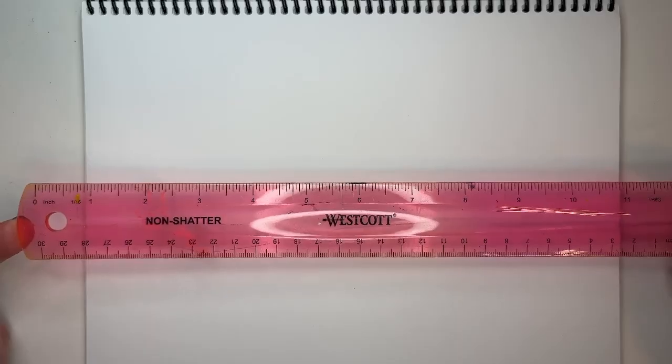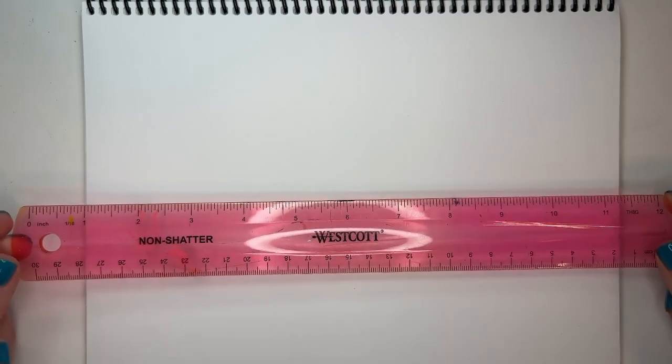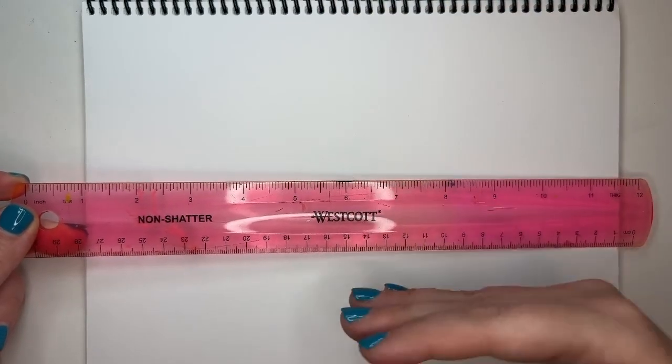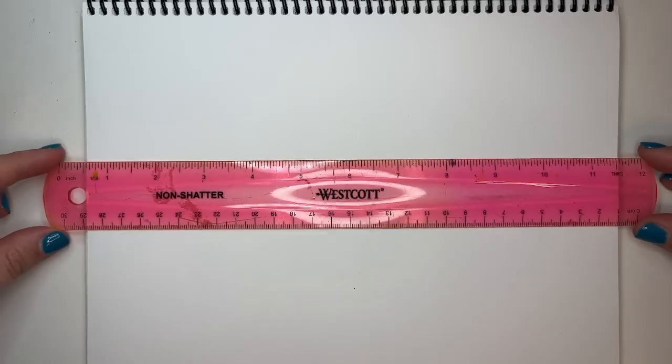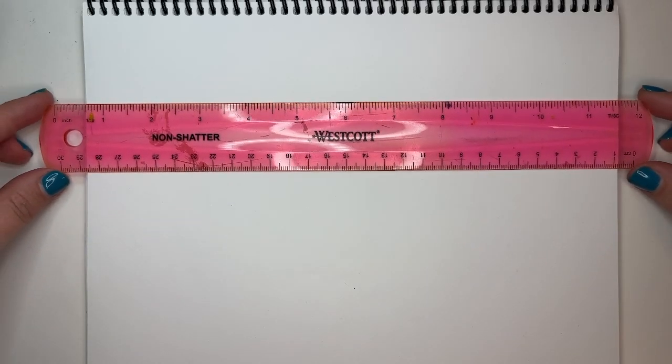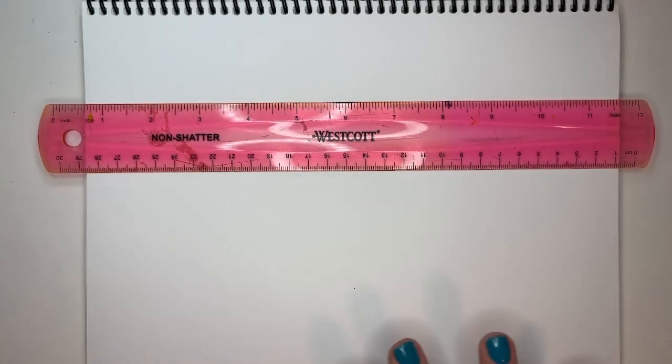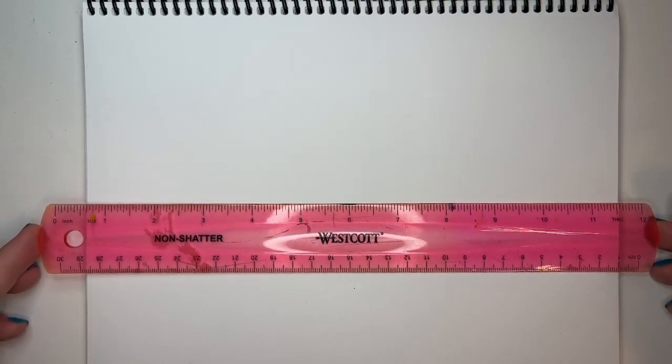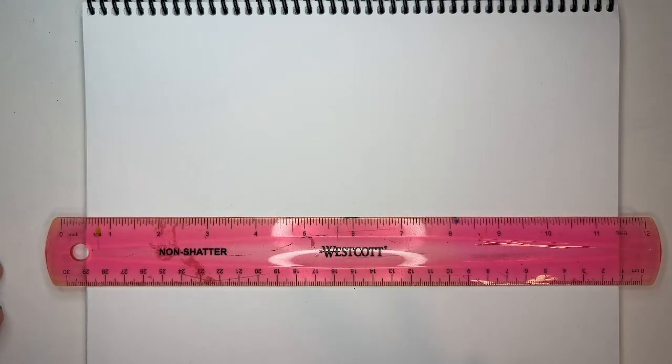To get started, we are going to draw a horizontal horizon line, dividing our paper into two sections. This represents where the sky meets the ground, and truly it can be anywhere that you want. Sometimes people want more of the ground showing and less sky. Sometimes people want more sky showing and less ground.